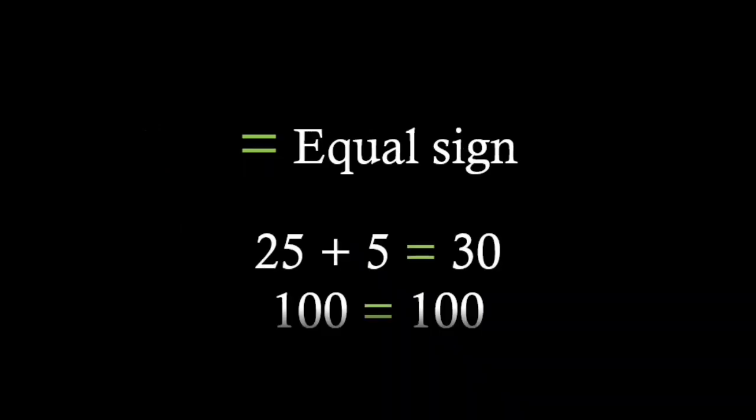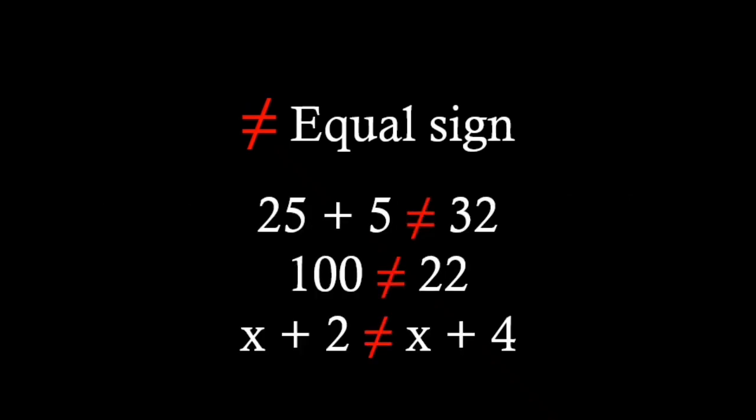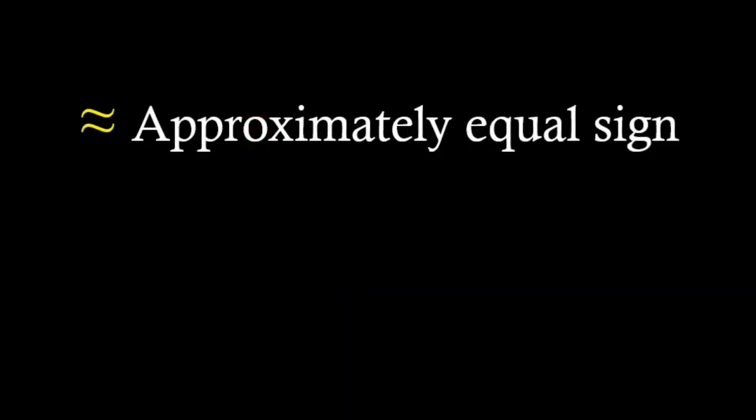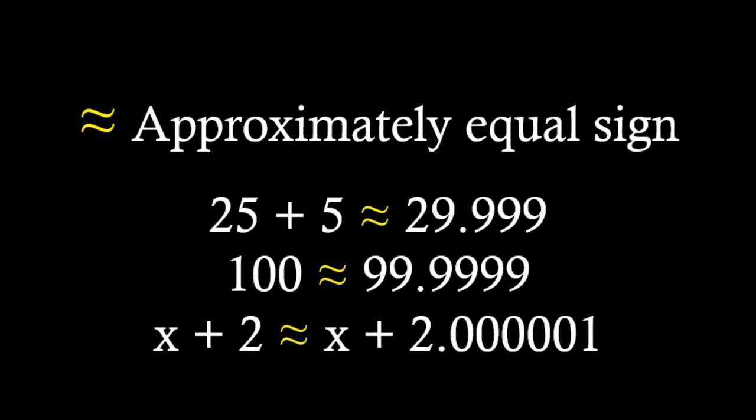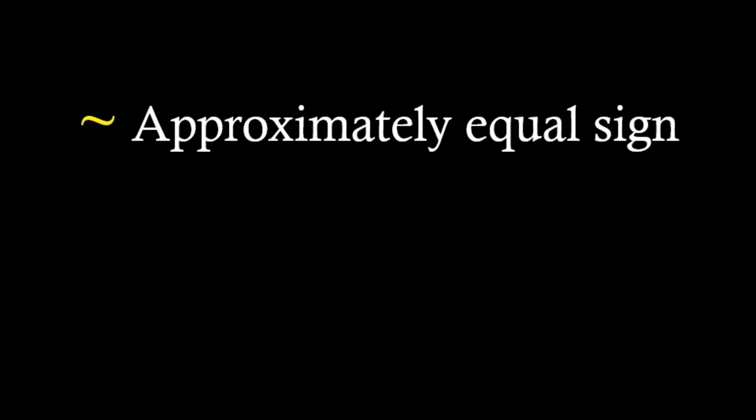The equal sign, represented by two lines which are equal in length, is used to denote the equality between two expressions. The opposite of the equal sign is the not equal sign, which indicates that two expressions are not equal. Approximately equal sign is used when two values are not exactly equal but are close enough. Instead of approximately equal sign, we can also use tilde, but tilde also denotes similarity or proportionality.